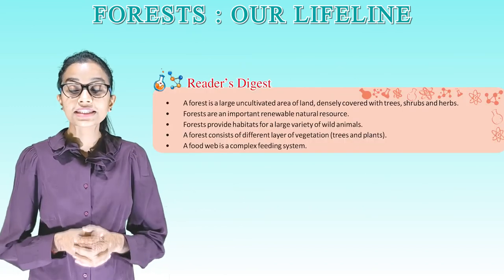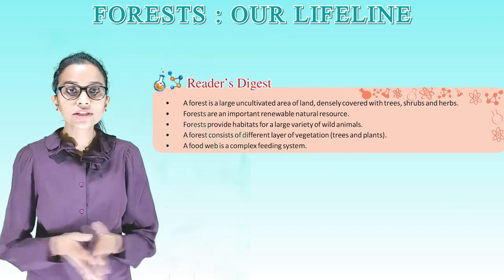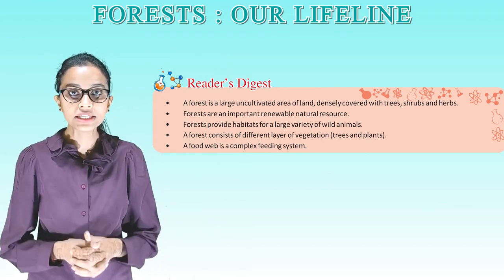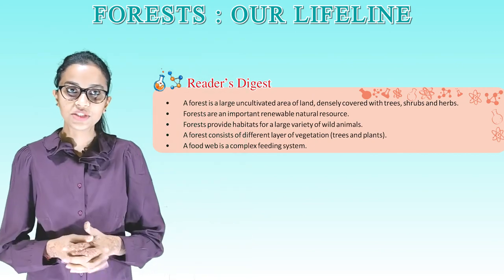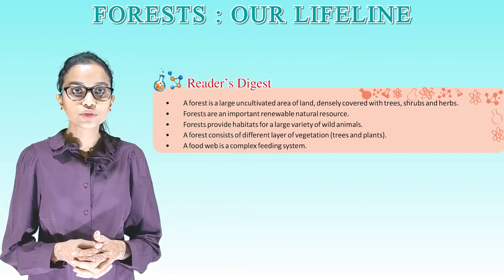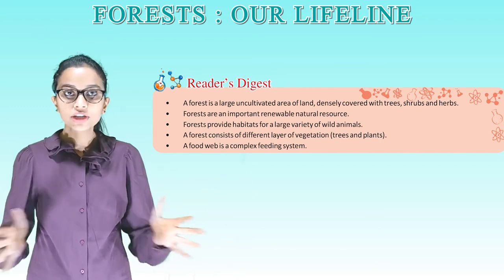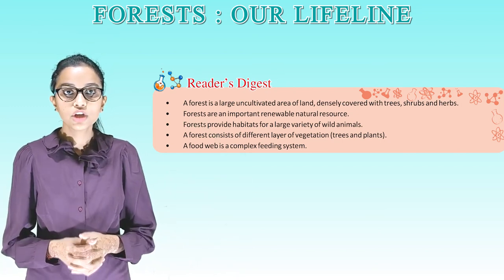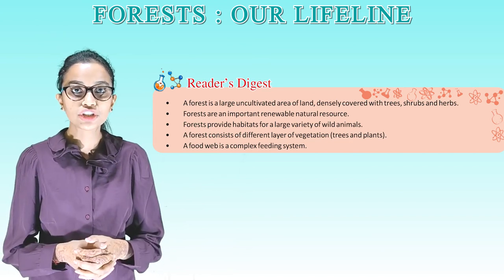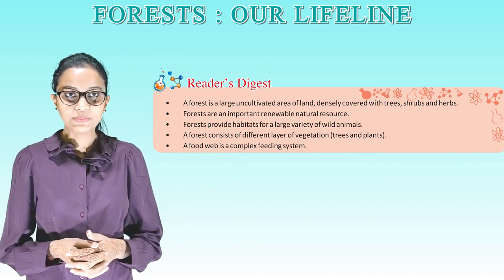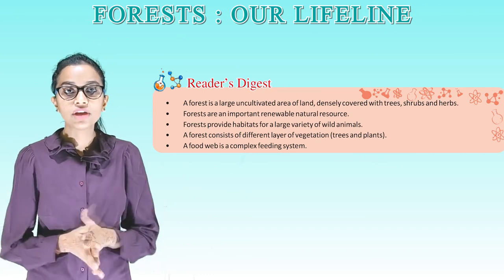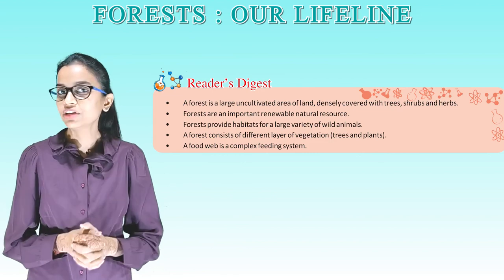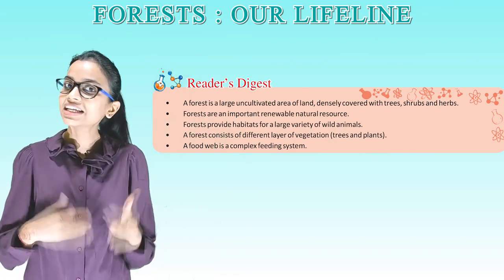So students, it's time for a recap. A forest is a large uncultivated area of land densely covered with trees, shrubs and herbs. Forests are an important renewable natural resource. Forests provide habitats for a large variety of wild animals. A forest consists of different layers of vegetation, trees and plants. A food web is a complex feeding system. That's all for today — we'll meet in the next class. Bye!